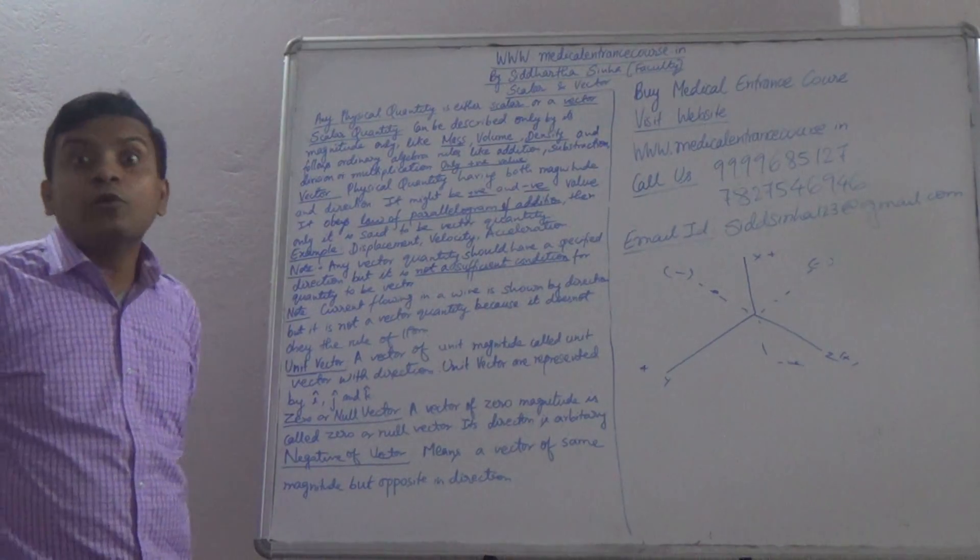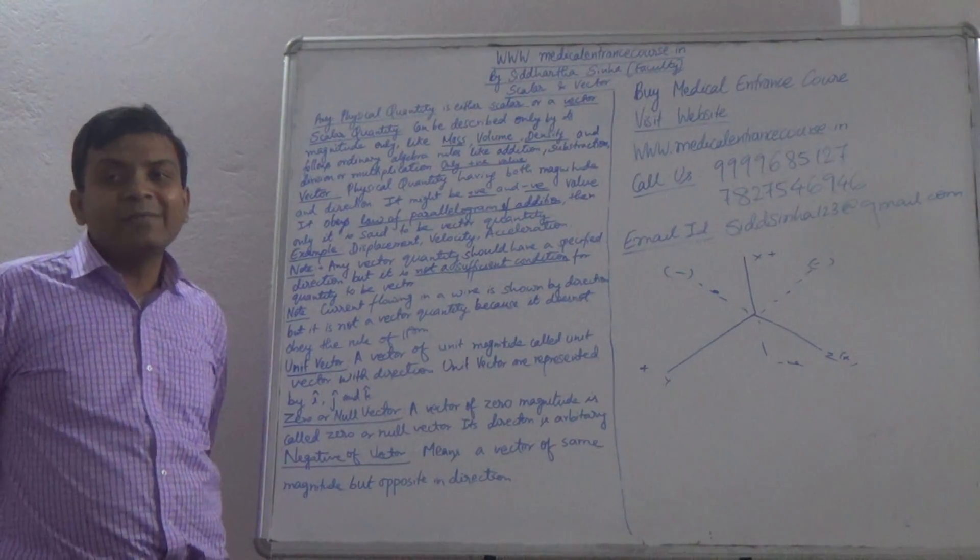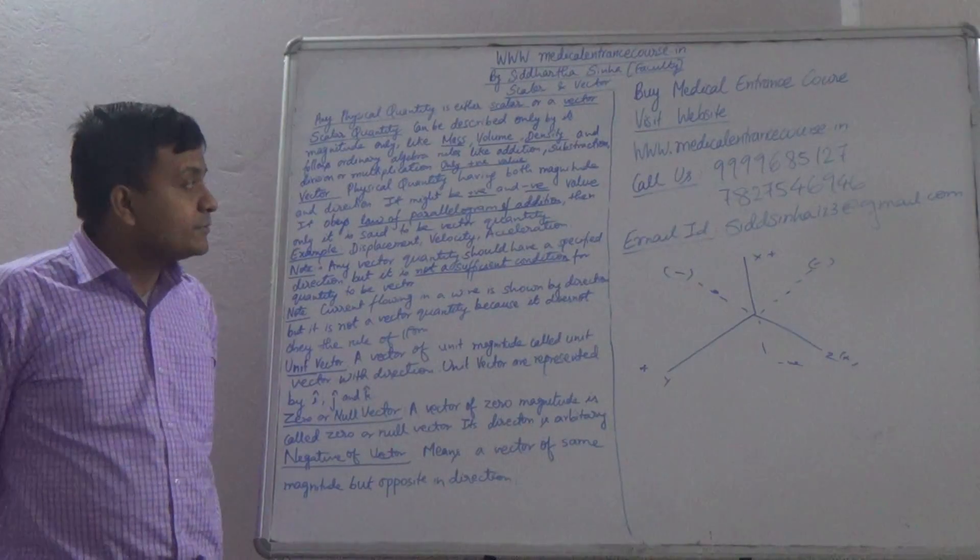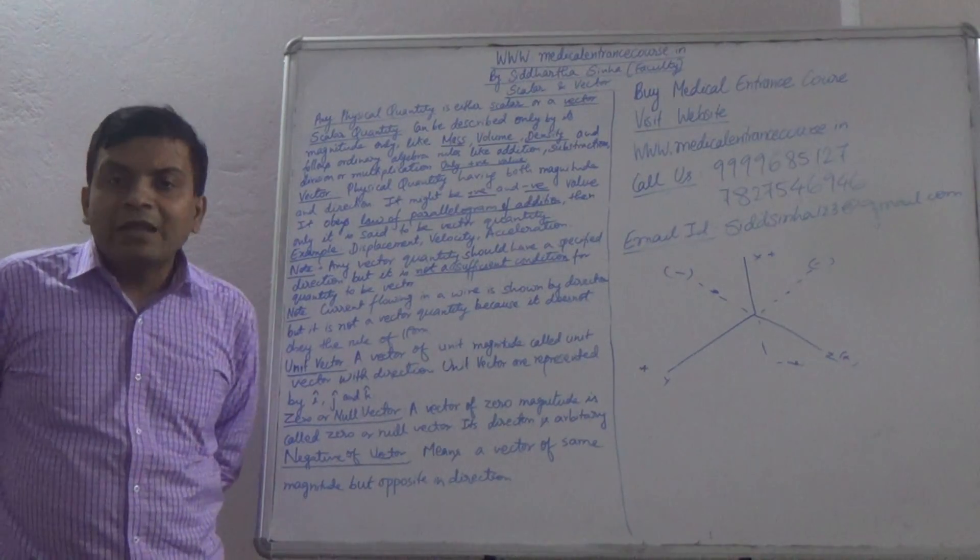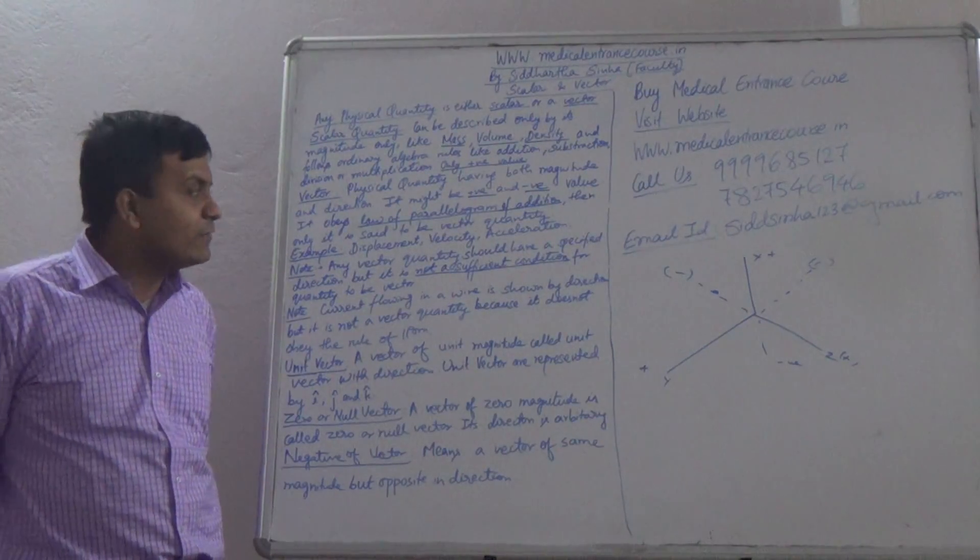Vector means one more quantity. Any physical quantity having magnitude and direction. Magnitude plus direction is known as vector. It might be positive value or negative value.